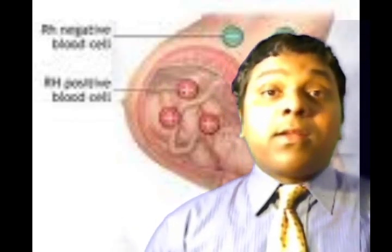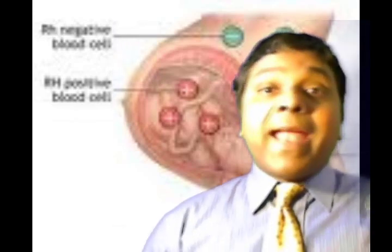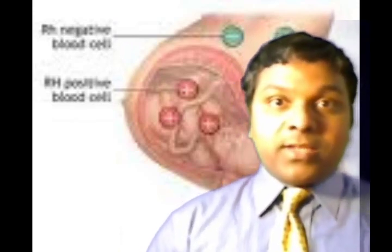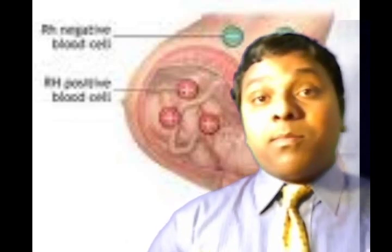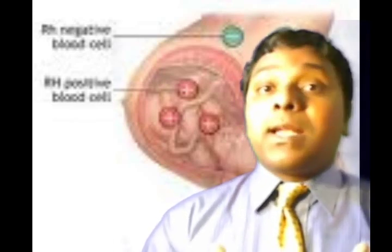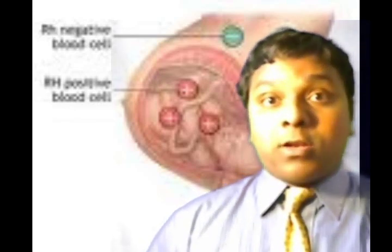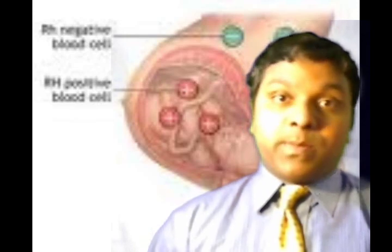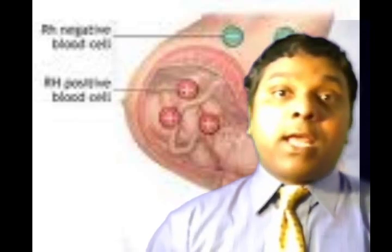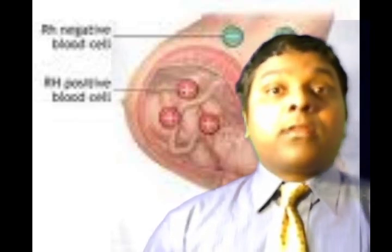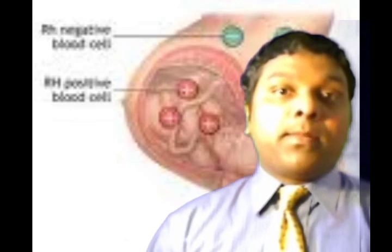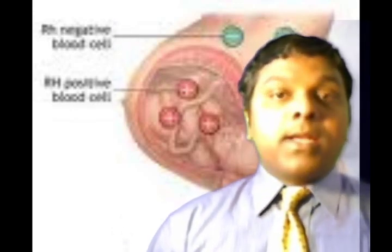So the mom produces antibodies against these fetal blood cells. Those antibodies cross the placenta, enter the circulation of the fetus, and attack its red blood cells. When those red blood cells are destroyed, bilirubin is released. As long as the fetus is in the mother, the mom's circulatory system cleans up that bilirubin. But when the baby is born, bilirubin starts to act as a neurotoxic substance, accumulating in the basal ganglia. As a result, the baby can develop anemia, erythroblastosis fetalis, and even death, depending on the degree of incompatibility.